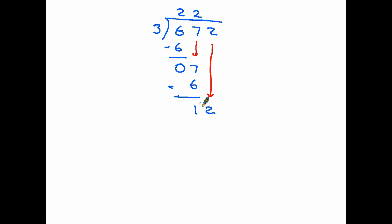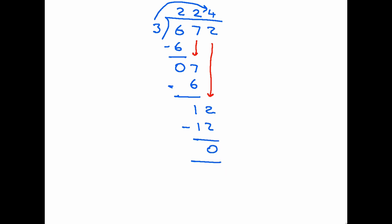Now we've finished with the seven, we bring down the two, which goes on the end of the one — we are then saying it is twelve divided by three, which is four. Do the multiplication again as a check: three times four is twelve. Put that on the bottom, take it away, and we have nothing left — we've come to the end of our sum. Some may prefer short division by simply carrying the one, and that's perfectly fine; we're using simple examples to show how long division works.